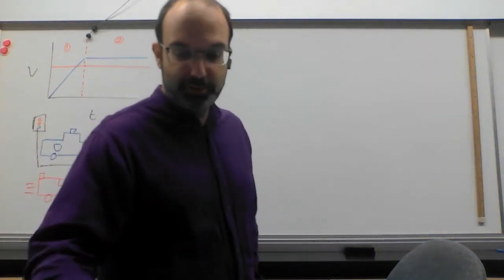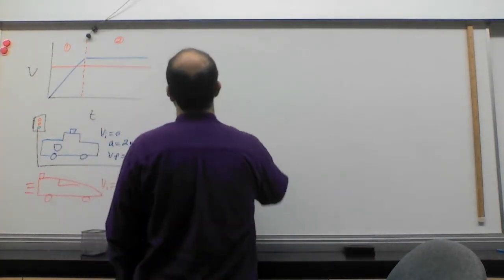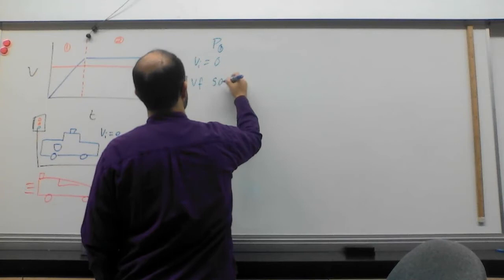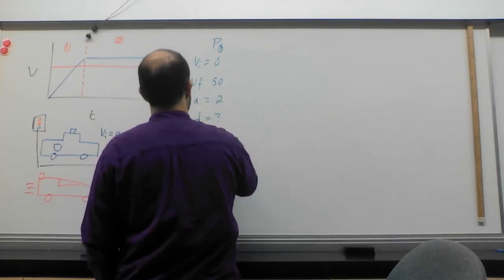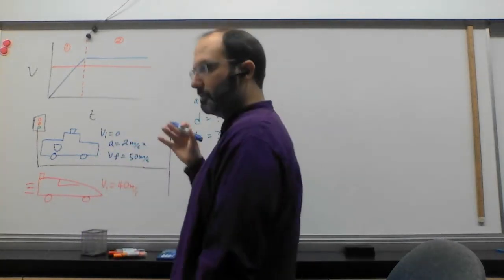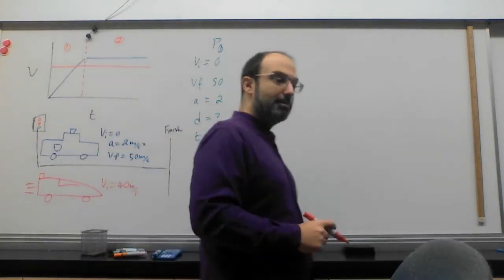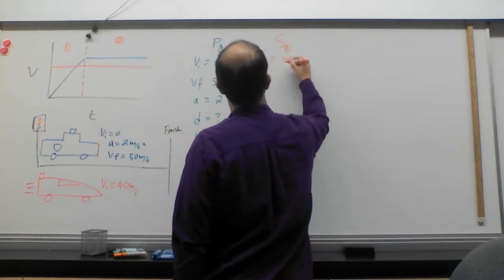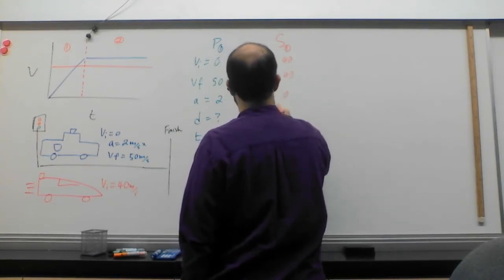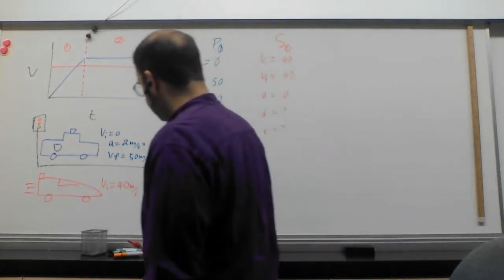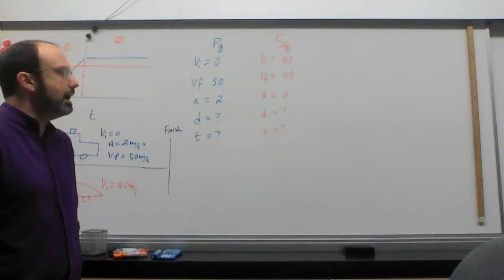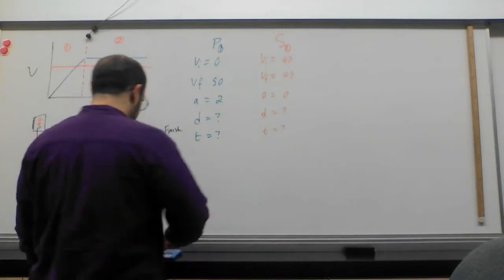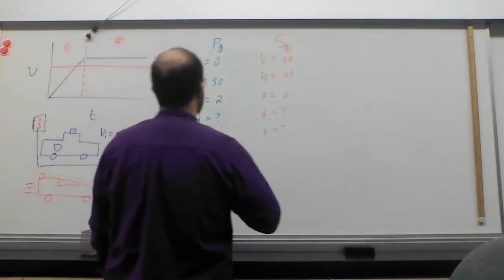When we want to talk about that first section, we write out our information. We've got the policeman in that first area, and we have his VI as zero, his VF as 50, his A as 2, his D we don't know, and his T we don't know. But that's three pieces of information. We have a lot. We can solve this like normal. Compare that to the speeder in the first area. Well, his velocity is 40, as is his velocity final, and his A is zero. D we don't know, T we don't know. I can solve this. I have enough information that I can solve the police car relatively easily.